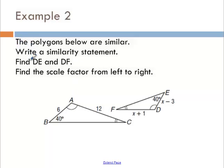The polygons below are similar, write a similarity statement, then I need to find some sides. Triangle ABC is similar to triangle, let's match it up. A has one mark, D has one mark. B has no marks, so it's 40 degrees. E has no marks and it's 40 degrees and then the only one left is F. I need to find DE and DF.